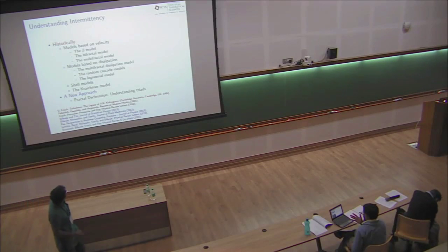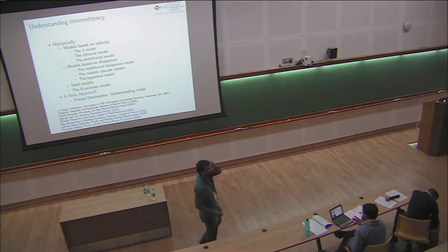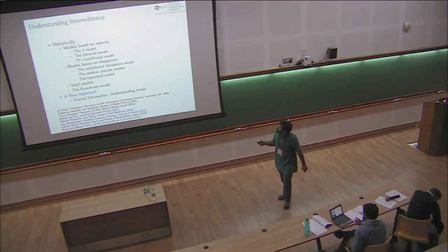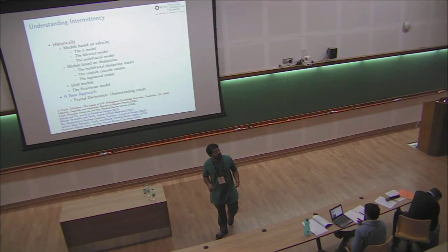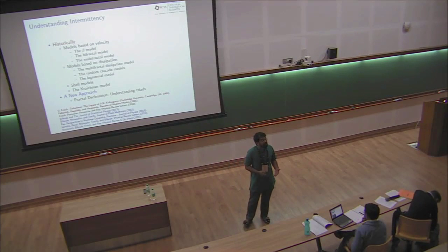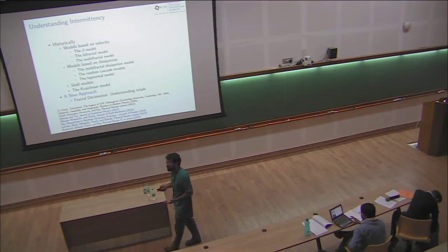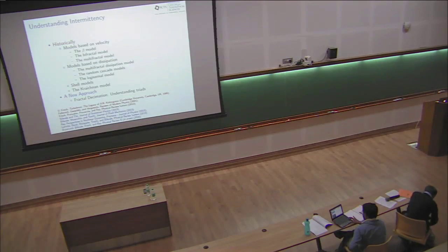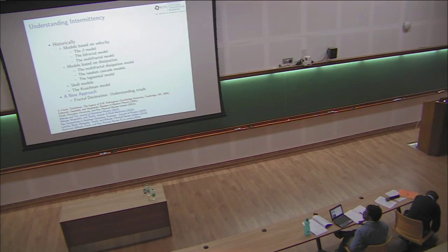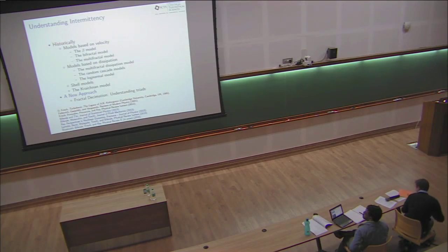Historically, people have tried to understand intermittency, and these have been models based on the velocity field or models based on the nature of dissipation. These are phenomenological models — not microscopic derivations from the equations — but they're wonderful and have provided breakthroughs in the field from the 70s. Then came what are known as shell models, a toy model which strangely enough seemed to reproduce a lot of the intermittent features. For example, the plot here could be produced by such shell models.